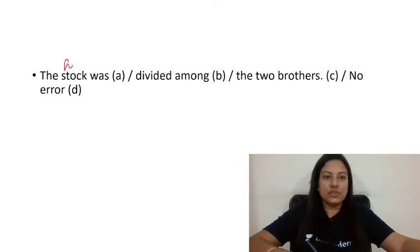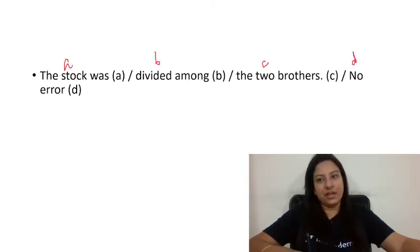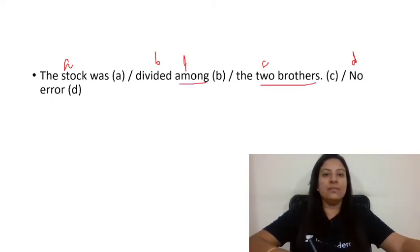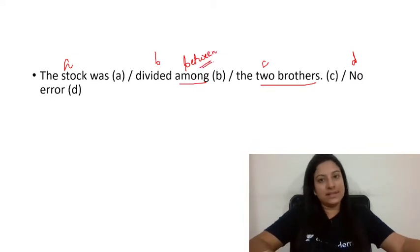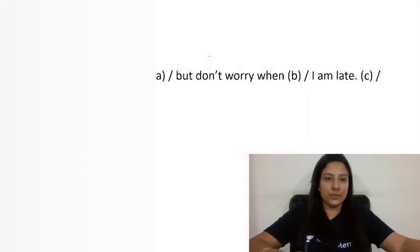Question 5: 'The stock was divided among the two brothers.' Since there are only two brothers, 'between' should be used instead of 'among'. 'Among' is used for more than two, and 'between' is used for two.